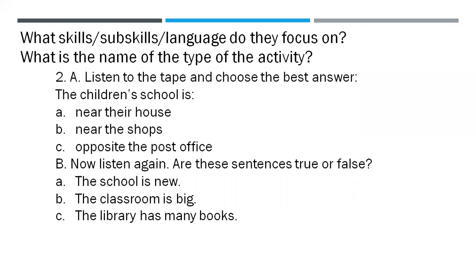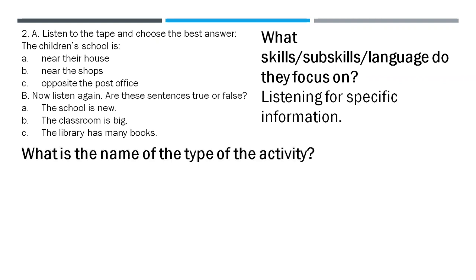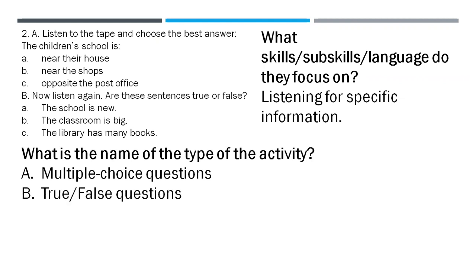Let's have a look at the second one with the same two questions. Activity: listen to the tape and choose the best answer — the children's school is: a) near the house, b) near the shops, c) opposite the post office. Then listen again — are these sentences true or false: the school is new, the classroom is big, the library has many books. Feedback: that is listening for specific information. For part A that would be a multiple choice question, and for part B true or false questions.